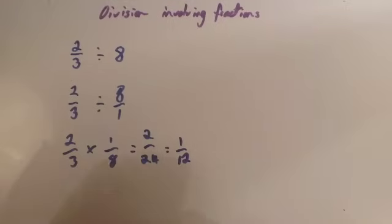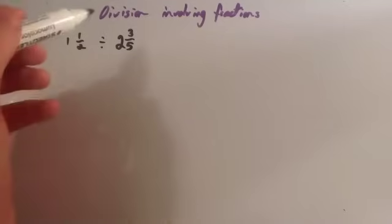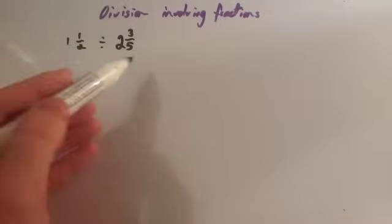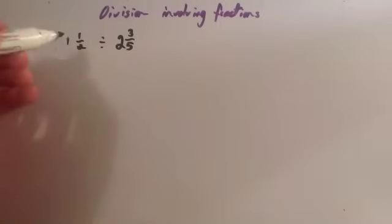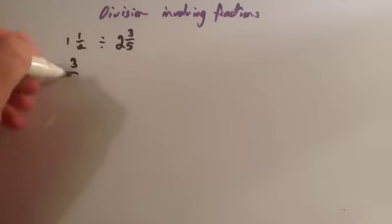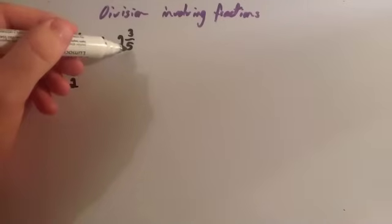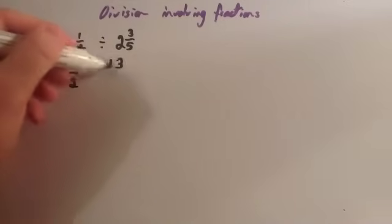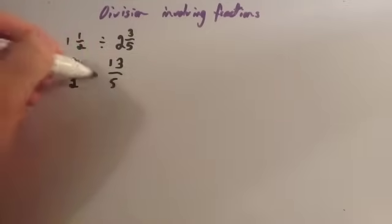Now let's look at some using top-heavy or mixed numbers. Before you do that, watch the video on improper fractions or top-heavy fractions to mixed numbers. Okay, before you do any divisions with mixed numbers, you want to make them top-heavy fractions to begin with. 1 times 2 is 2, plus 1 is 3. So that's three halves. 2 times 5 is 10, plus 3 is 13 over 5, and divide by.